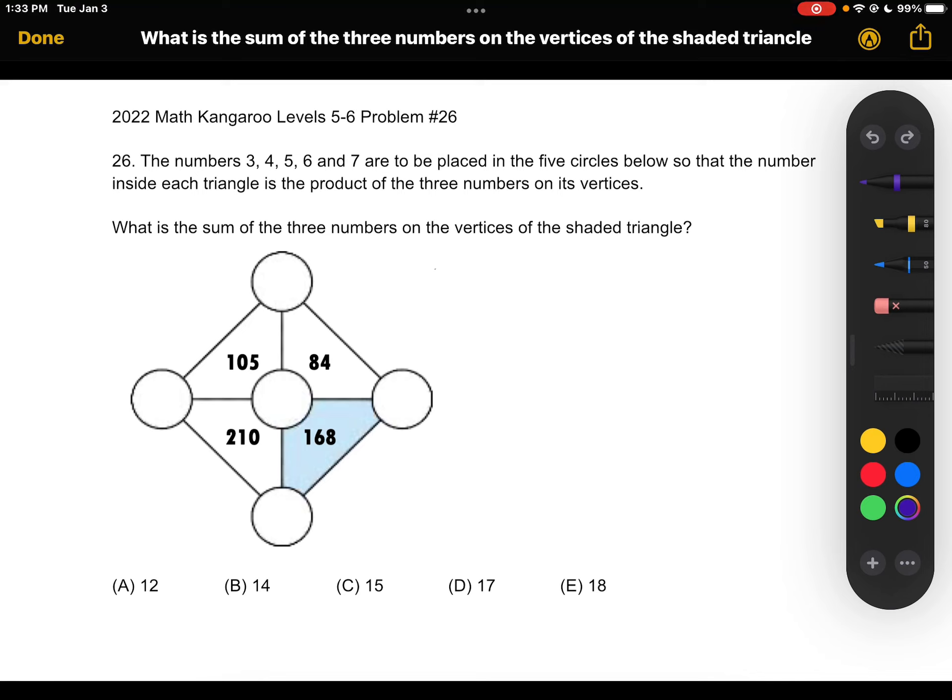What is the sum of the three numbers on the vertices of the shaded triangle? A, 12, B, 14, C, 15, D, 17, or E, 18.